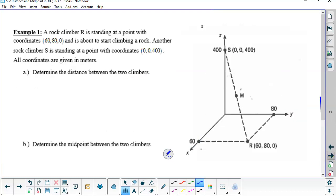We take a look at the first example. This says, a rock climber, R, is standing at a point with coordinates 60, 80, 0. So that's really on the x, y plane. Any two axes together forms a plane, because the z value is 0. Another rock climber is standing at a point with coordinates 0, 0, 400. So it's on the z axis. They're all given in meters. Determine the distance between the two climbers.